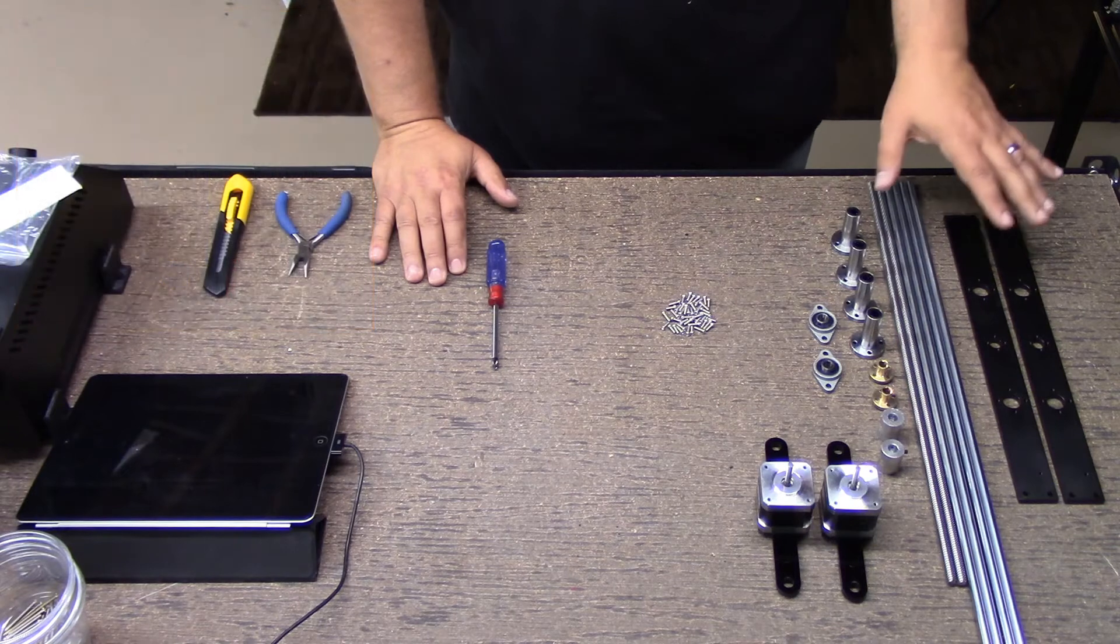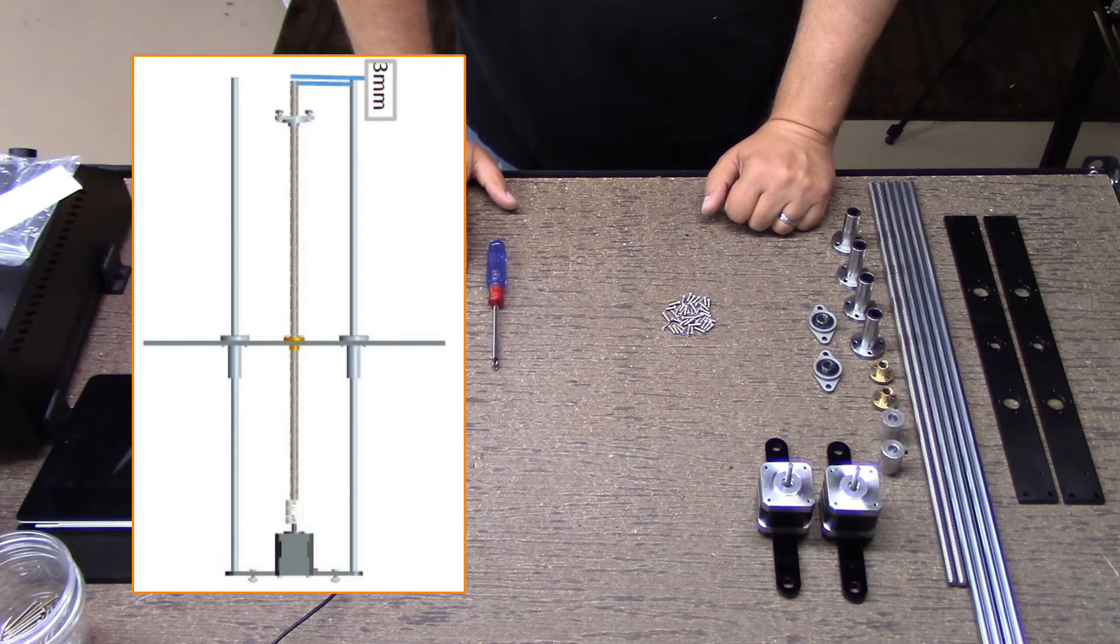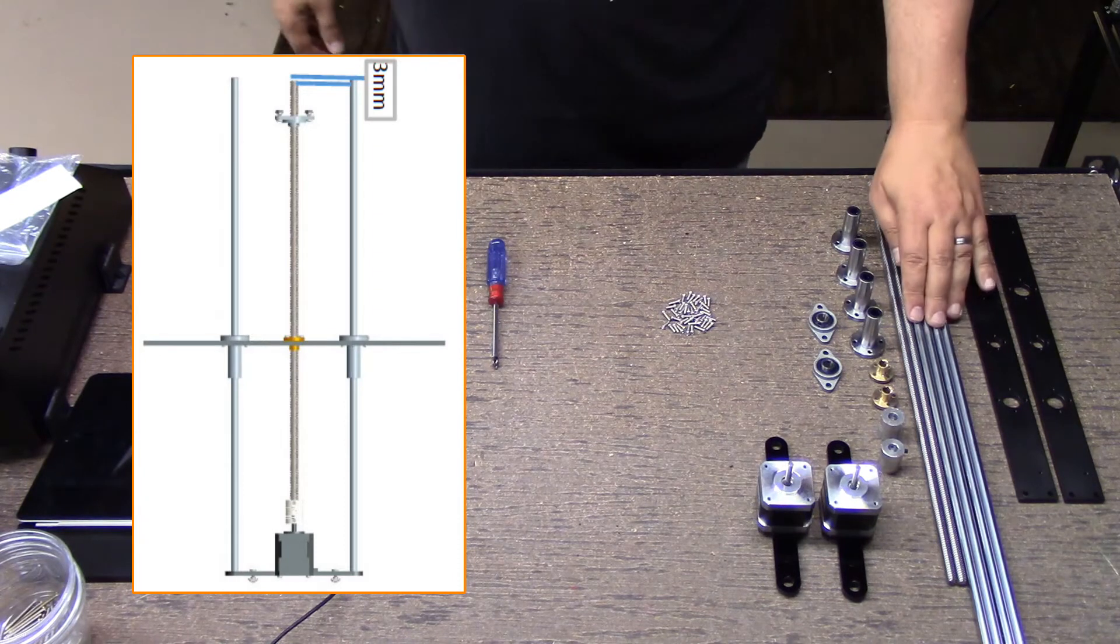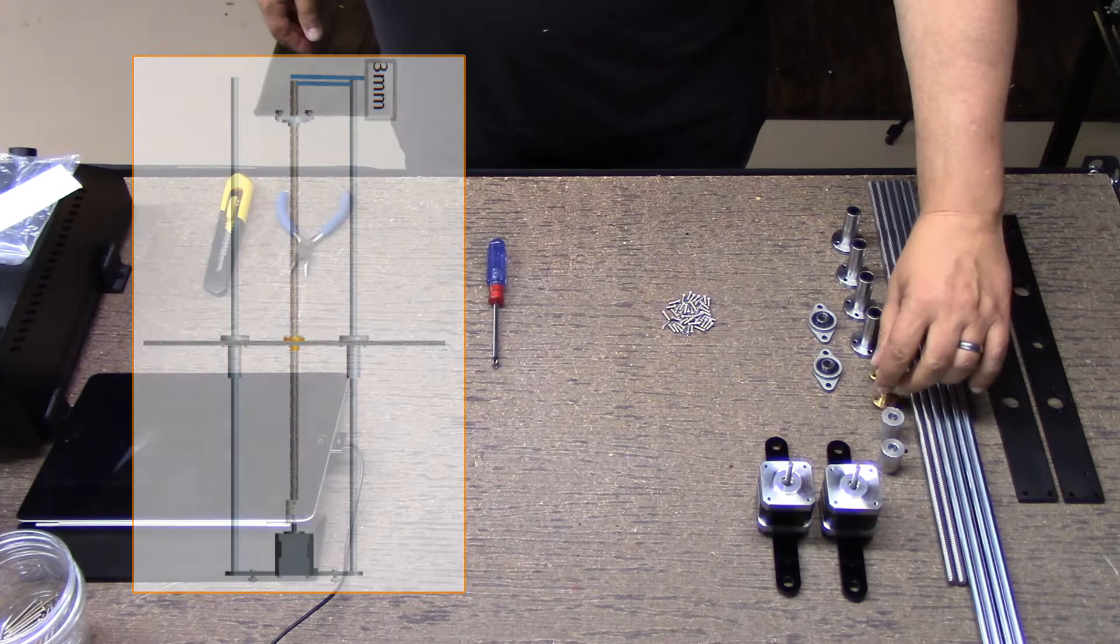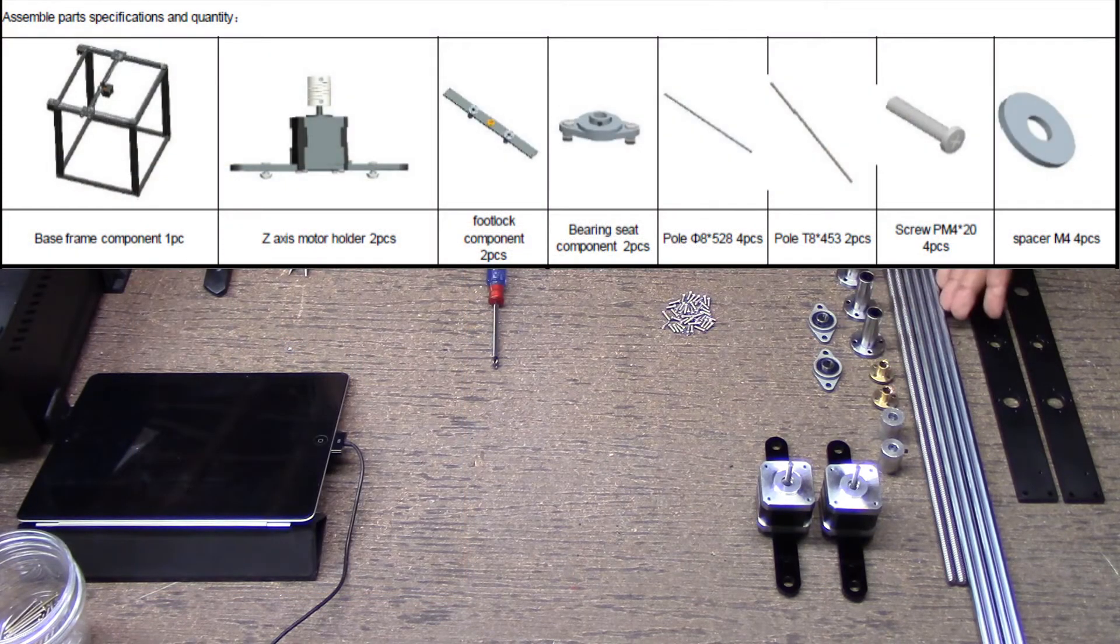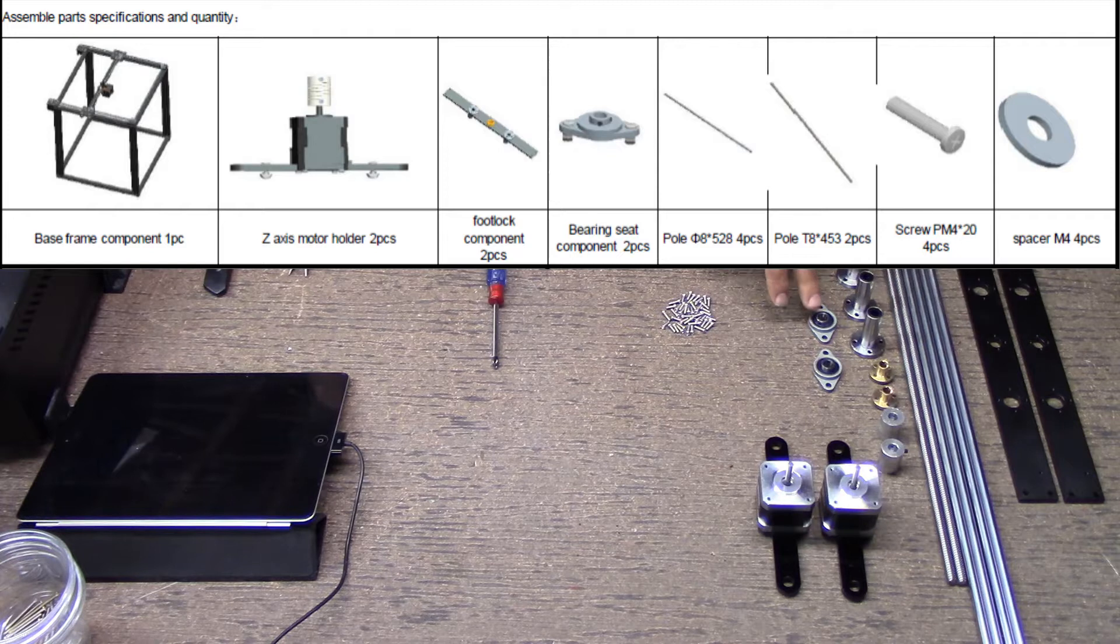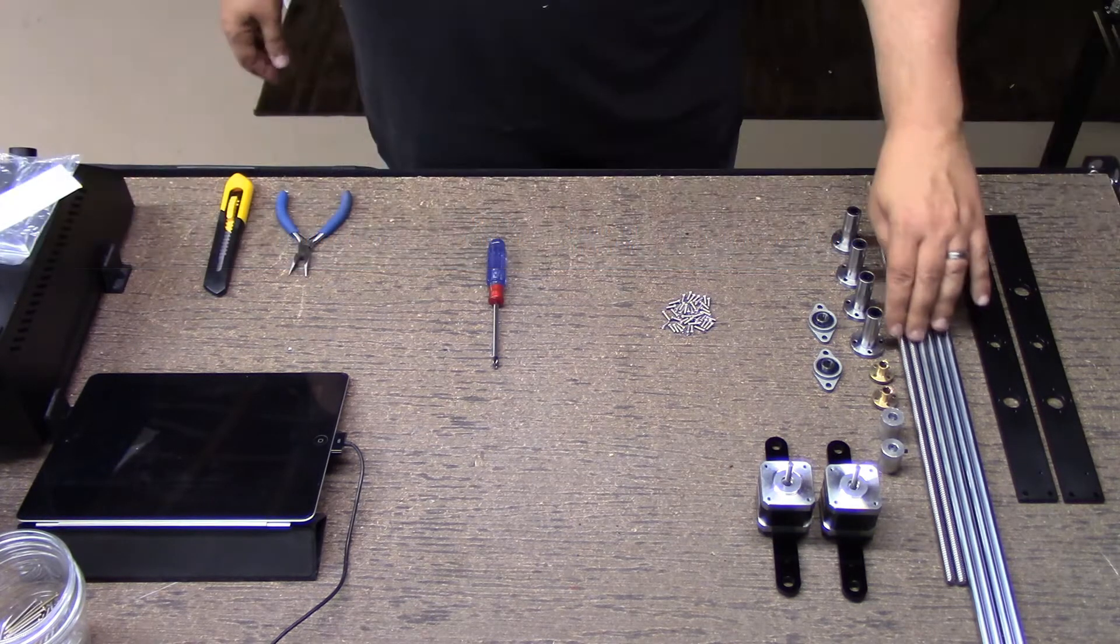So in this episode, what we're going to do is assemble the Z-axis. We've got the linear rods here, the Acme lead screws, the anti-backlash nuts, the rails or sliders for the linear rods, and then we have some bearings as terminators for the lead screws.